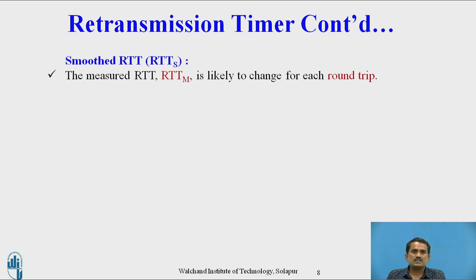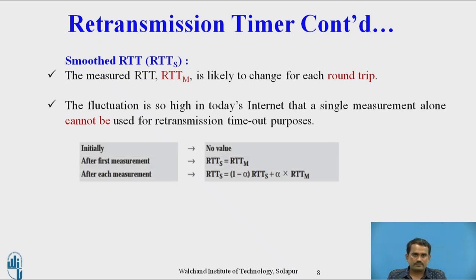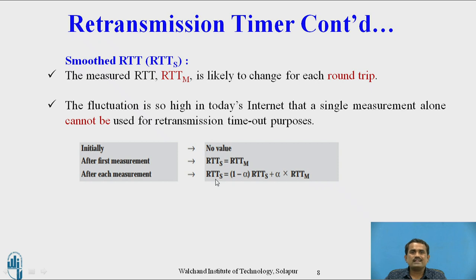Smooth RTT, denoted RTTS, is the smooth round trip time. The measured RTT_M is likely to change for each round trip, and in today's internet a single measurement alone cannot be used for retransmission timeout purposes. Initially, after the first transmission, RTTS equals RTT_M. After each subsequent measurement, the formula used is: RTTS = (1 - alpha) × RTTS + alpha × RTT_M.